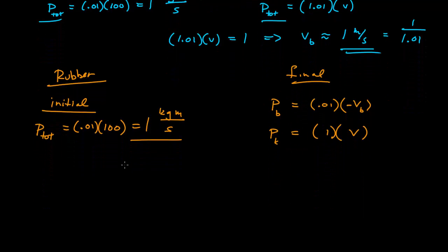So in this case, now, we have the sum of this, which is p total, which must equal our initial p total for momentum to be conserved. And so that gives us 1 is equal to v, which is our final velocity, minus 0.01 times v sub b, the speed of the bullet after the collision.